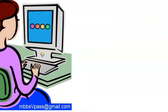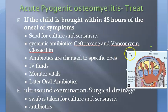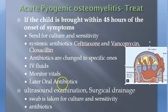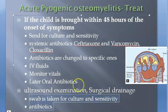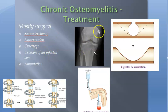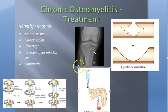In summary, the treatment of osteomyelitis: for acute, it is essentially antibiotics — ceftriaxone, vancomycin, cloxacillin — along with supportive care, and surgical drainage can also be tried. For chronic osteomyelitis, treatment is mostly surgical: sequestrectomy, saucerization, curettage, excision of infected bone, amputation, and continuous suction-irrigation drainage.